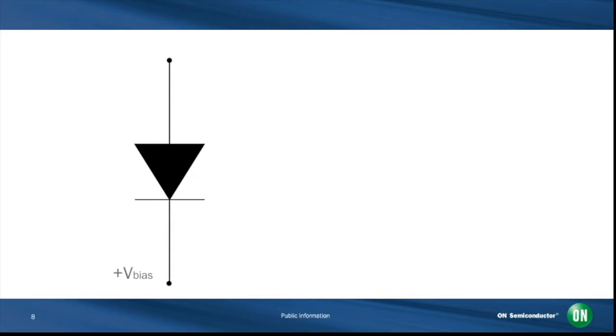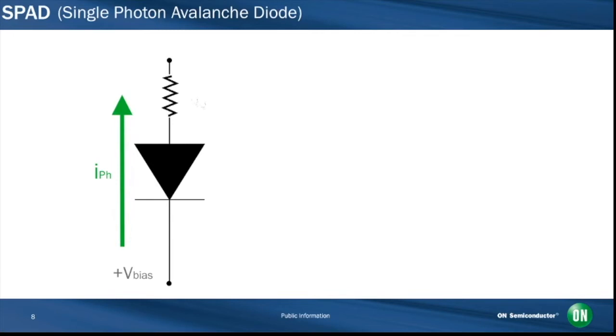Therefore, this type of photodiode is referred to as a SPAD or single-photon avalanche diode. A SPAD that has been triggered by an interacting photon will continue to generate current until it is stopped or quenched in some way. Without quenching, the SPAD would be unable to detect subsequent photons. Quenching can be achieved through the use of a series resistor, RQ, which limits the current drawn by the diode during breakdown.